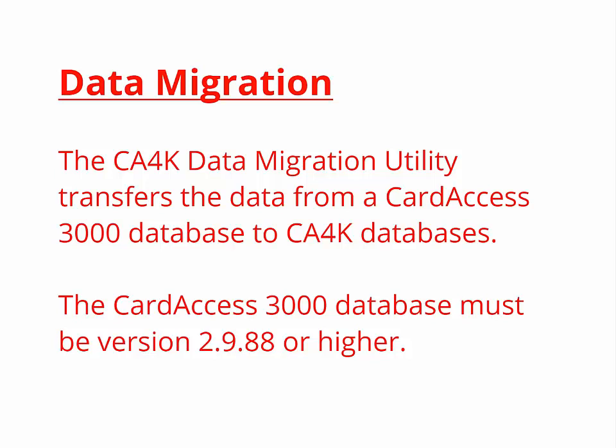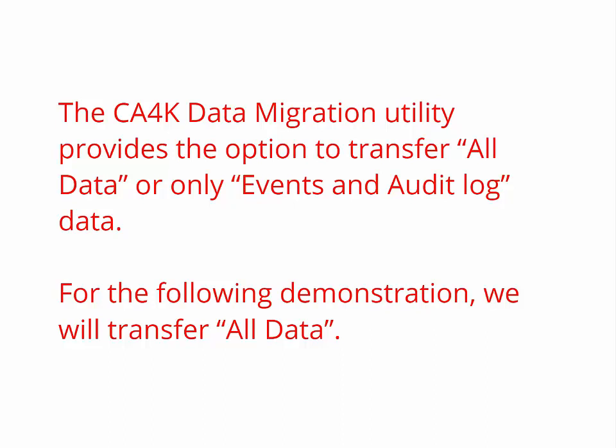The following screens will guide you through migrating a Card Access 3000 database over to CA4K databases. The CA4K data migration utility transfers the data from a Card Access 3000 database to CA4K databases. Very important: the Card Access 3000 database must be version 2.9.88 or higher to use the data migration utility. If your Card Access 3000 database is not up to version 2.9.88, you must contact Continental Technical Support and arrange to send the database in to get it upgraded.